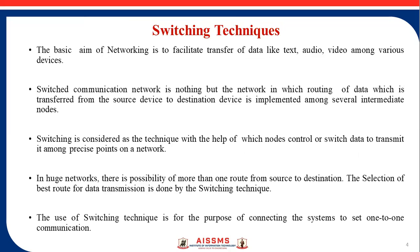Next we will discuss switching techniques. The basic aim of networking is to facilitate transfer of data like text, audio, and video among various devices. A switched communication network is a network in which routing of data transferred from a source device to a destination device is implemented among several intermediate nodes. Switching refers to the techniques by which a node controls or switches data to transmit it among precise points on a network. In a large network, there can be more than one route from source to destination, and the selection of the best route for data transmission is done by these switching techniques. Switching techniques are used for the purpose of connecting systems to set up one-to-one communications.